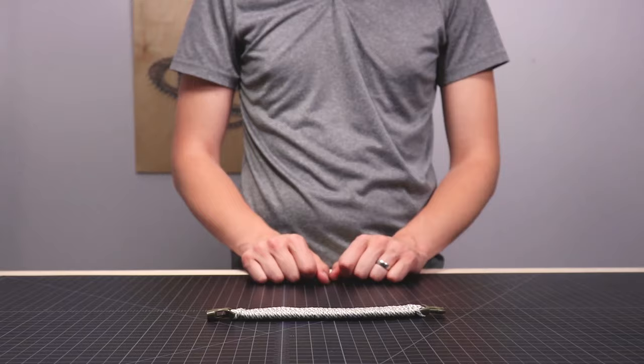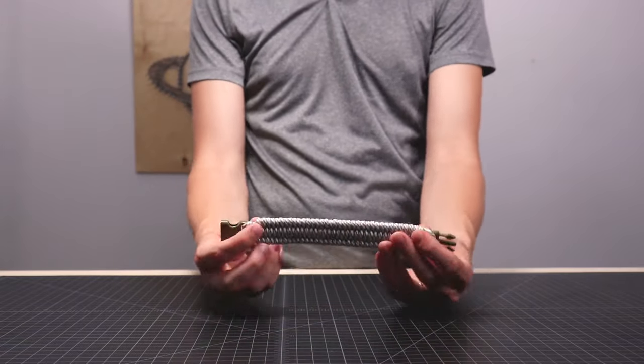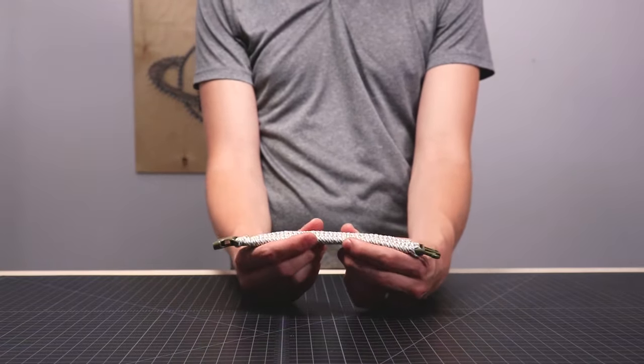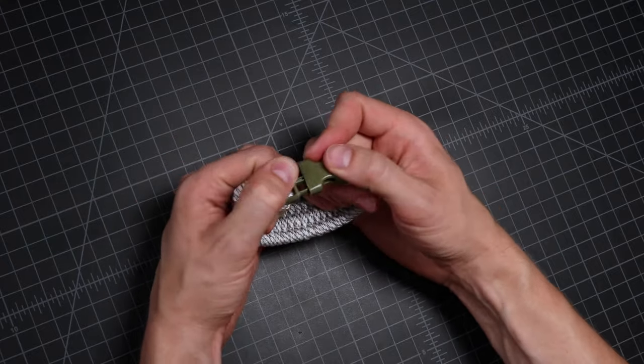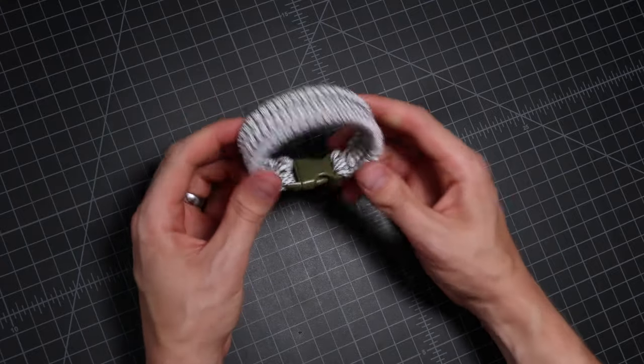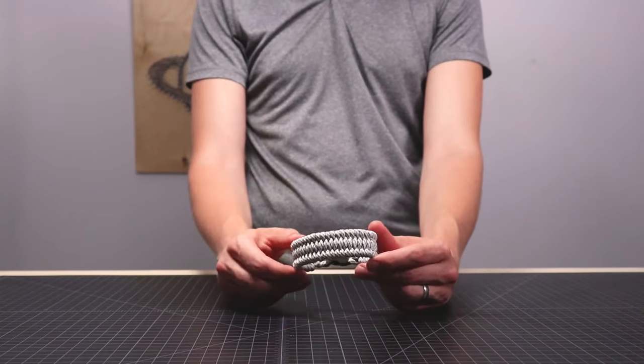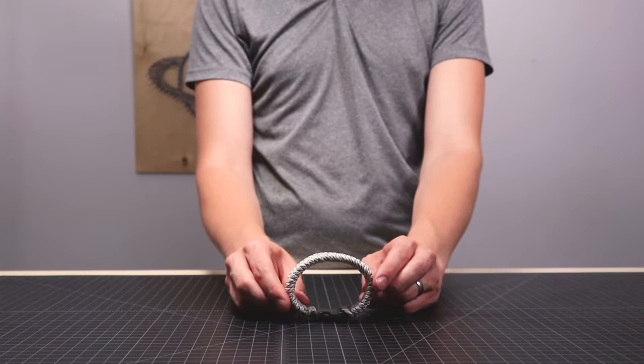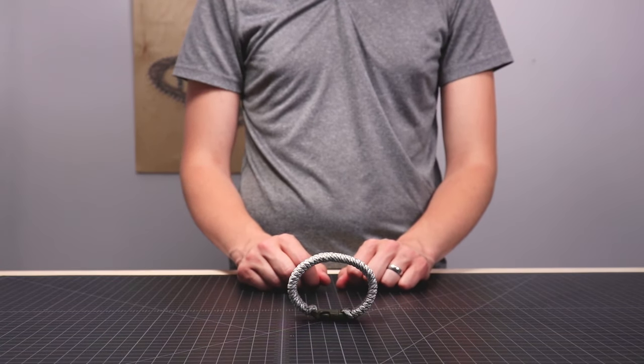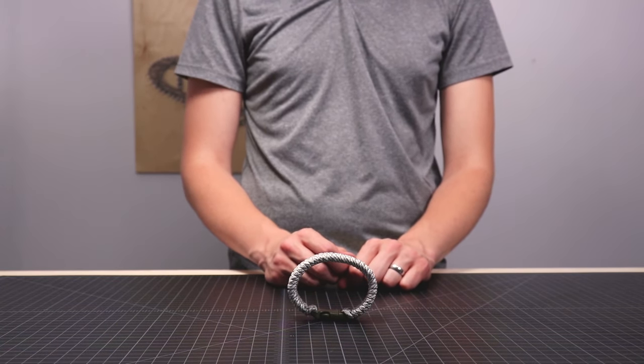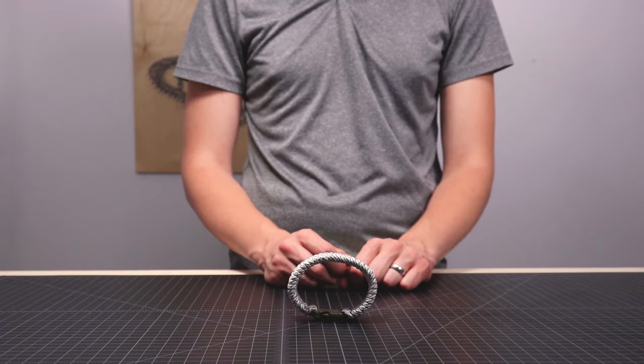So there is our bracelet all done. A lot of people like the trilobite weave because it's nice and flat and also wide. It ends up being a lot more comfortable than a cobra weave and it makes a really good watch band. But if you enjoyed this video, hit the like button and subscribe if you want to see more. We'll put links to the supplies used in this video down in the description and even hit the notification bell if you don't want to miss an update. Otherwise, thanks for watching and we'll see you next time.